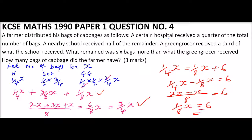From one over eight X equals six, we get X equals 48 bags. So the farmer had 48 bags of cabbages initially, and that is how you work out this question.